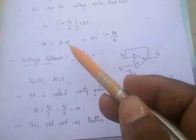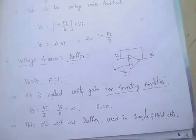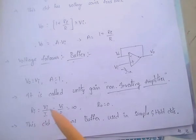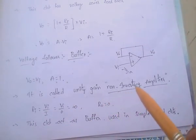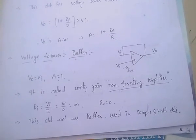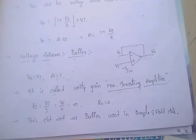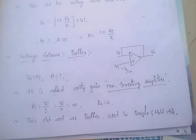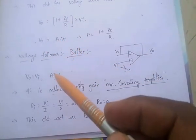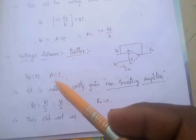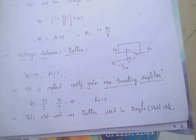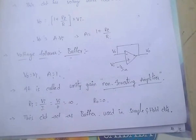Here, A is nothing but 1. It is called unity gain non-inverting amplifier, because the output equals the input means A equals 1, meaning gain equals unity. That's why it is called unity gain non-inverting amplifier.